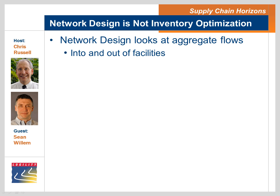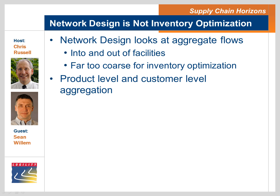That rings true — when we were doing this, we would aggregate not only the product level but also the customer level, right? Exactly. We'd aggregate channels, lasso these big piles of demand, and also do it in pretty big time buckets across the horizon — years or quarters. Exactly. It's going to be at best quarterly, typically annually. Since you're making these macro decisions of whether facilities are being kept open or whether a particular DC is being used to serve a geography, that's not something anyone's going to change monthly.